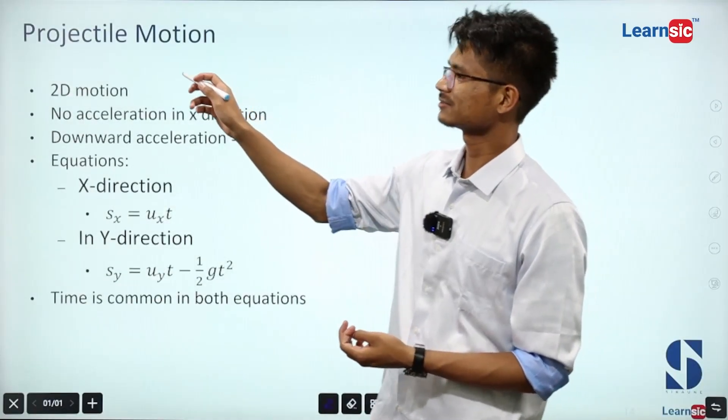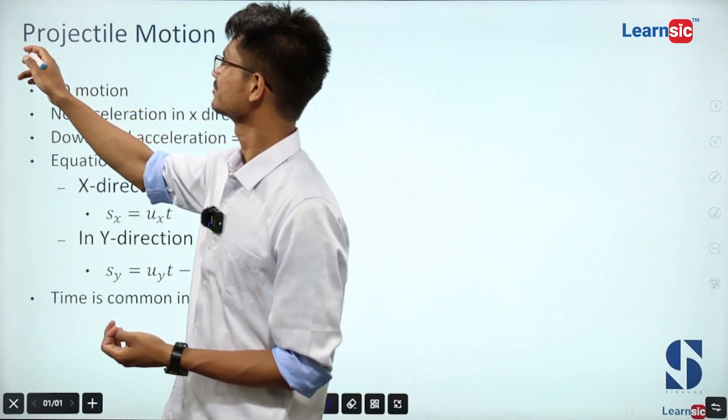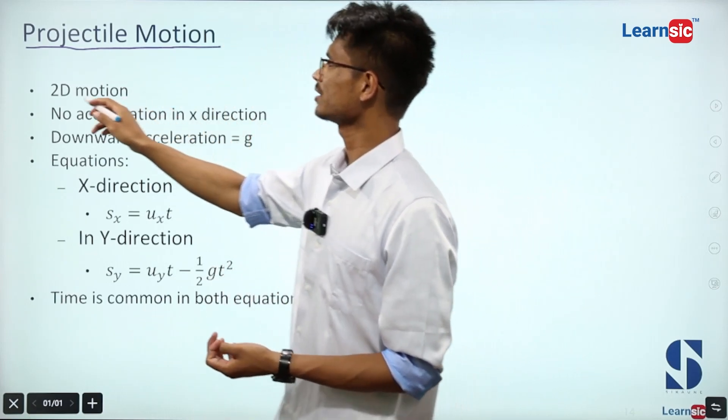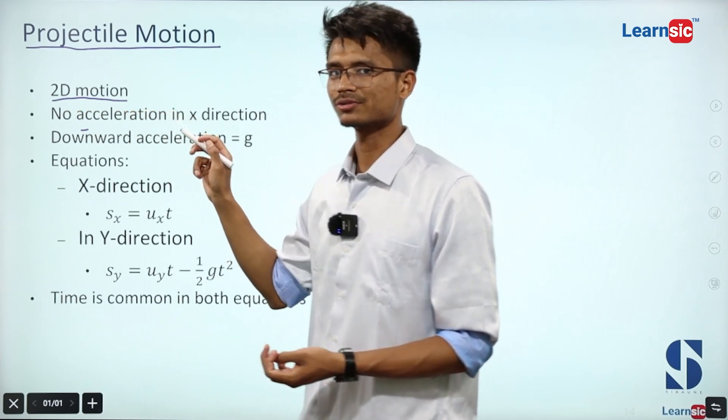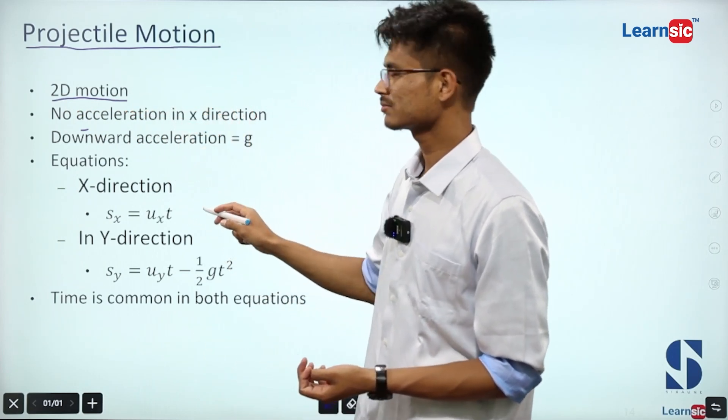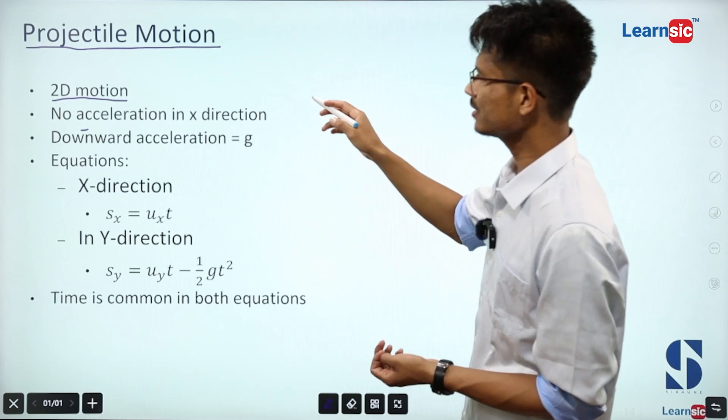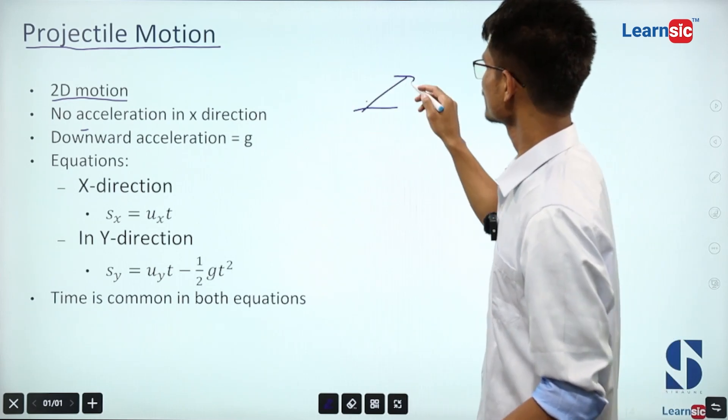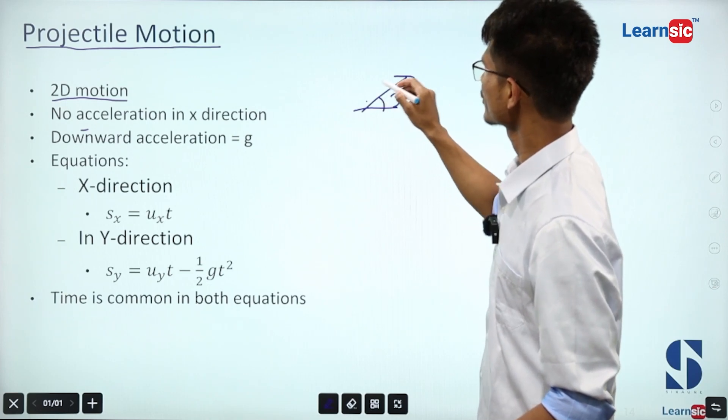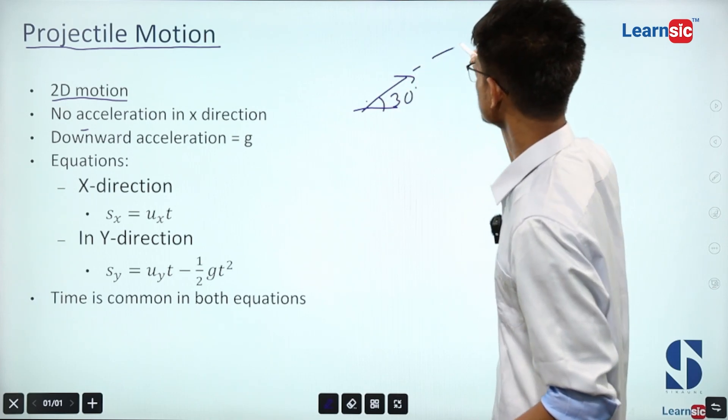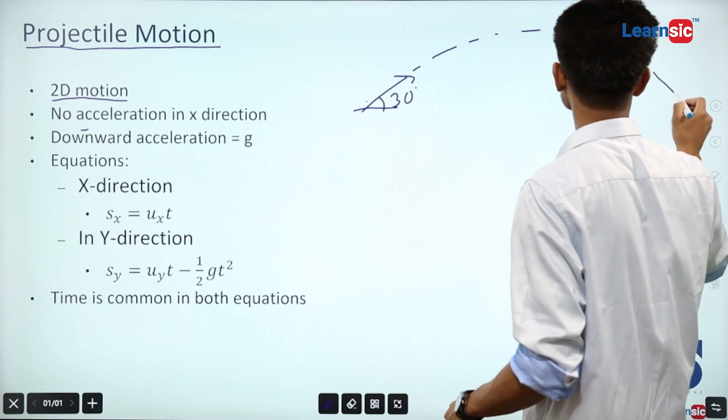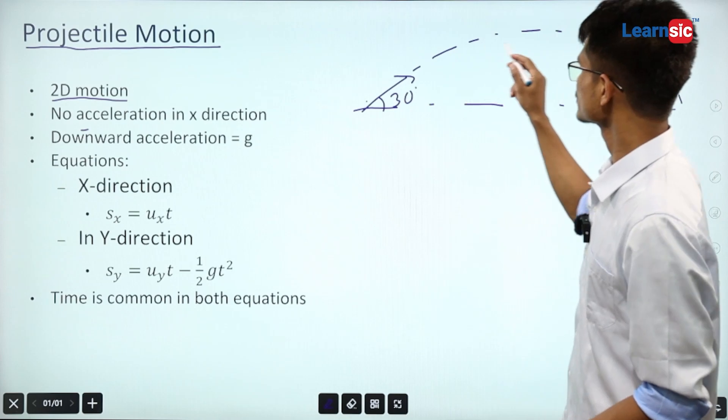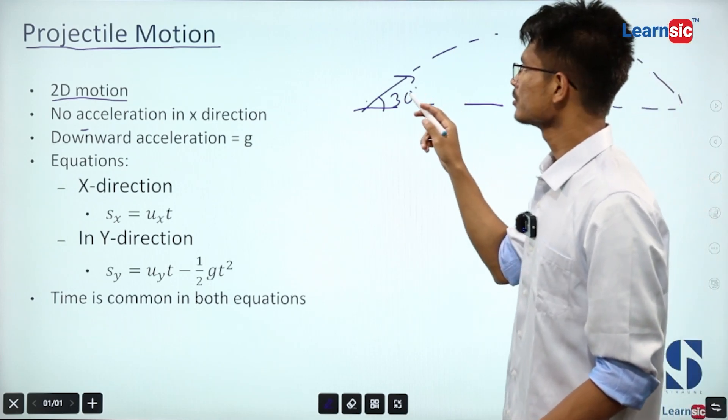Hello, today I am going to talk about projectile motion. Projectile motion is two-dimensional motion with components in the x direction and y direction. Any motion in real life where the ball moves in an arc, in a parabolic path, is projectile motion.